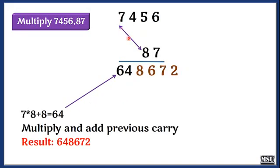At last we are going to multiply 7 and 8 and then plus carry, it is 64. The result is 648672.